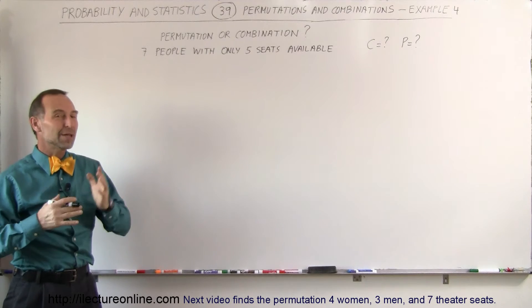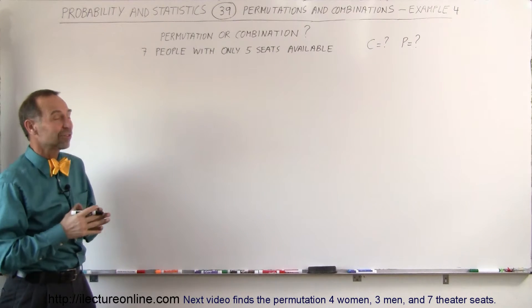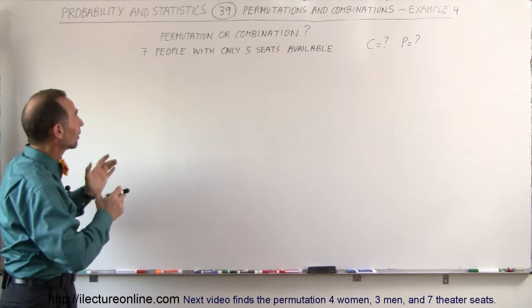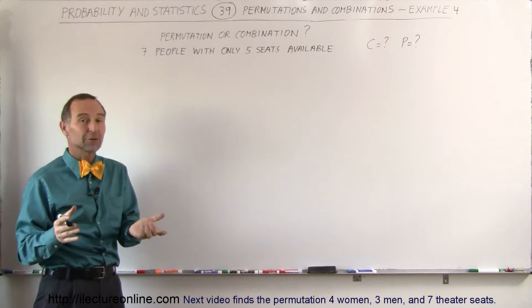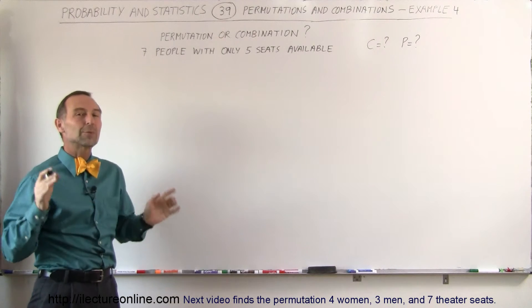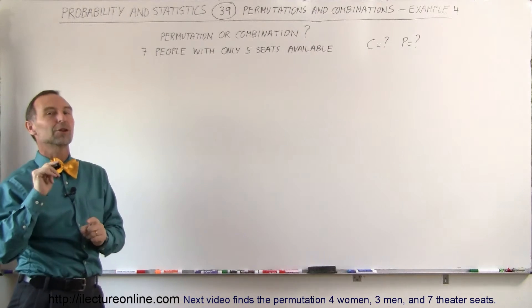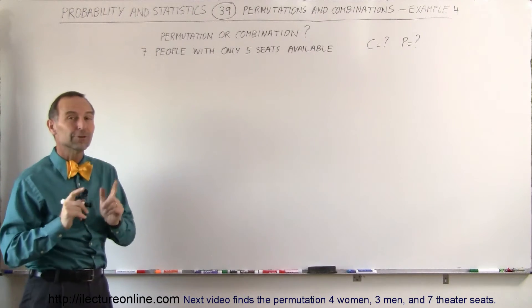Welcome to ElectronLine. Now that we think we know permutations and combinations, let's do an example out of the blue. Let's say someone came along and says we have seven people, there's only five seats, in how many different ways can we arrange them? What are the number of combinations where order does not matter and what are the number of permutations where order does matter?